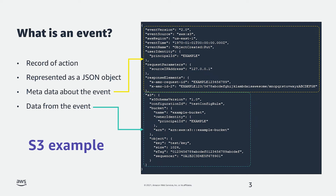First of all, let's make sure we all agree on what an event is. An event is a record of an action that has happened in the past. In this context, it is represented as a JSON object that contains data from the event and metadata about the event.